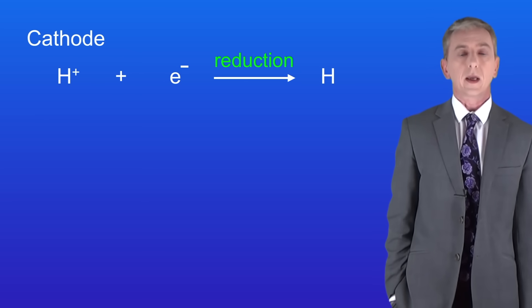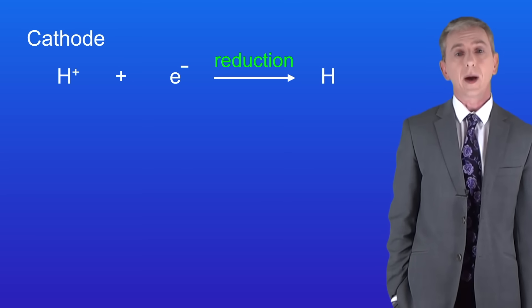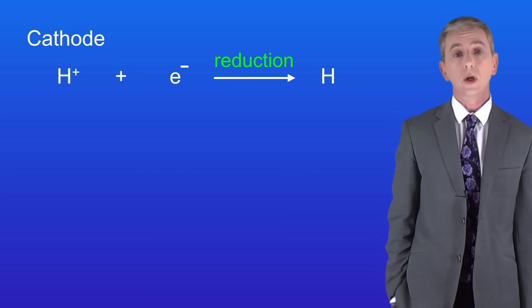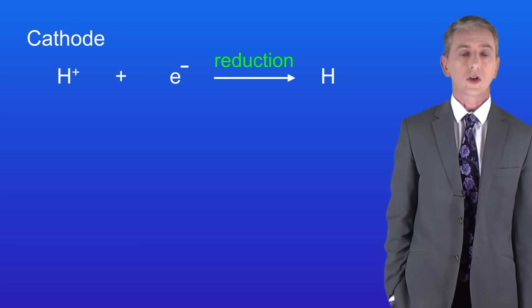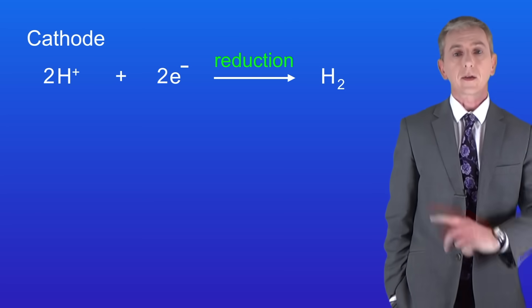Now there is a problem here. Hydrogen atoms immediately pair to form a hydrogen molecule H2. So we need to double this equation to show the formation of H2, and I'm showing that here.